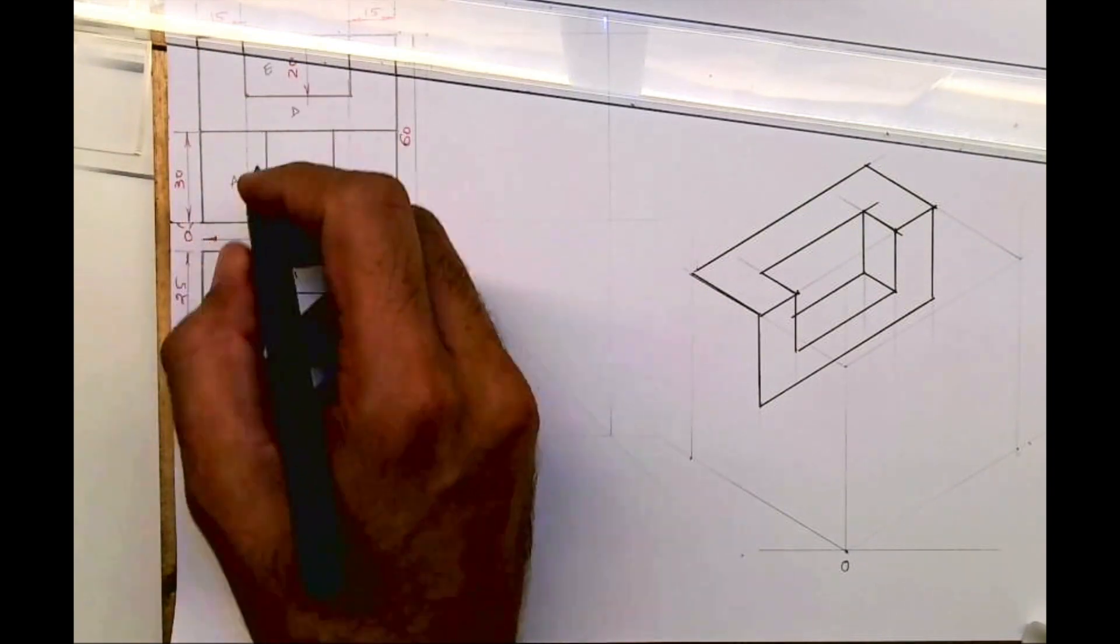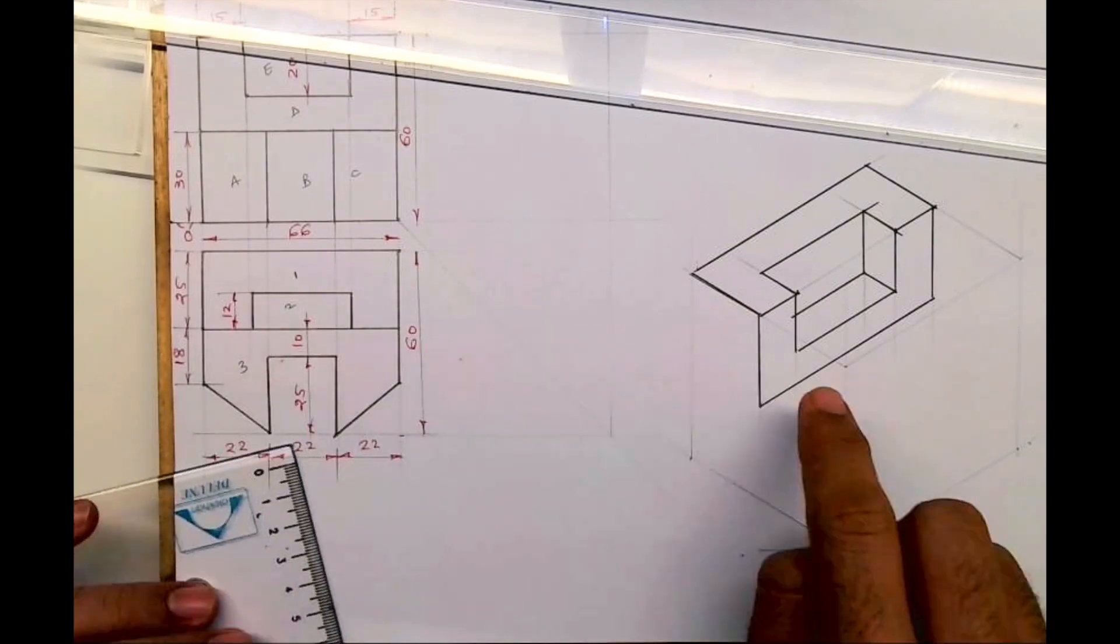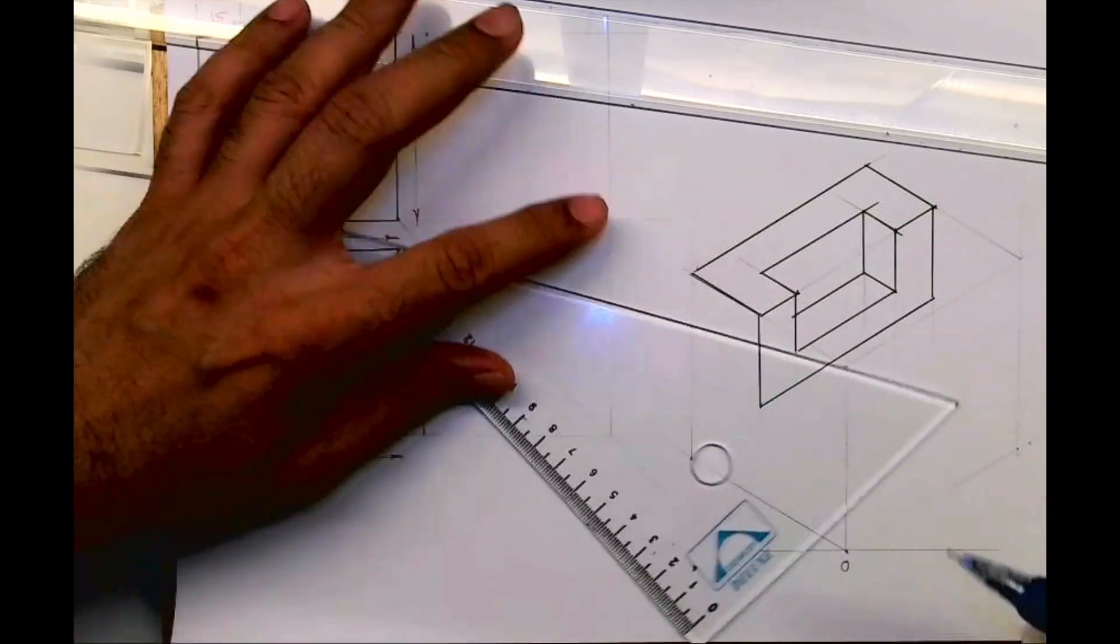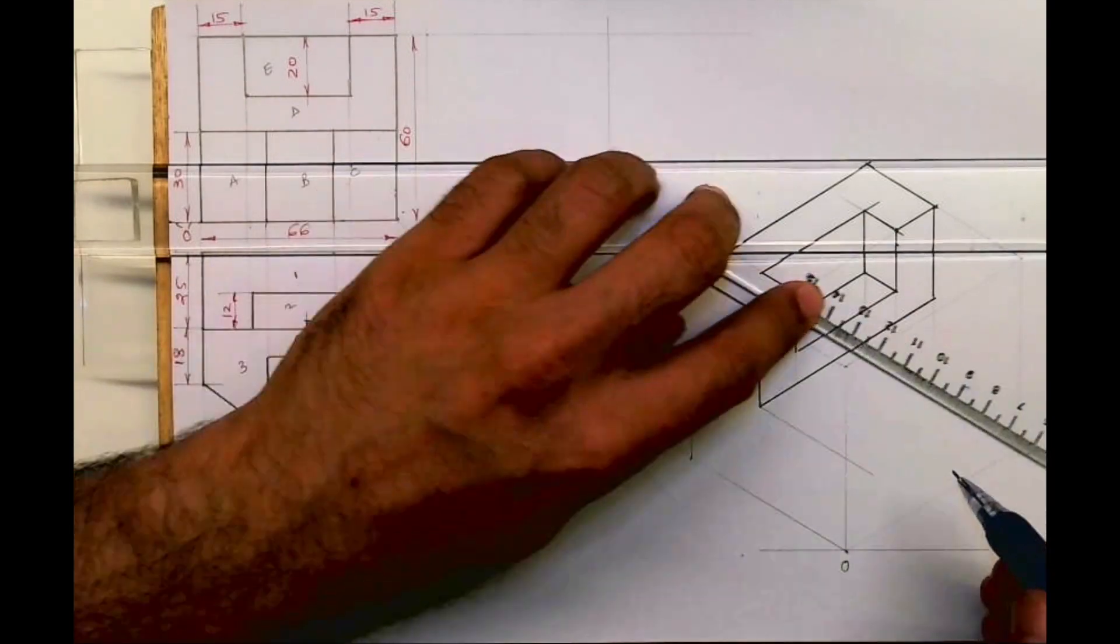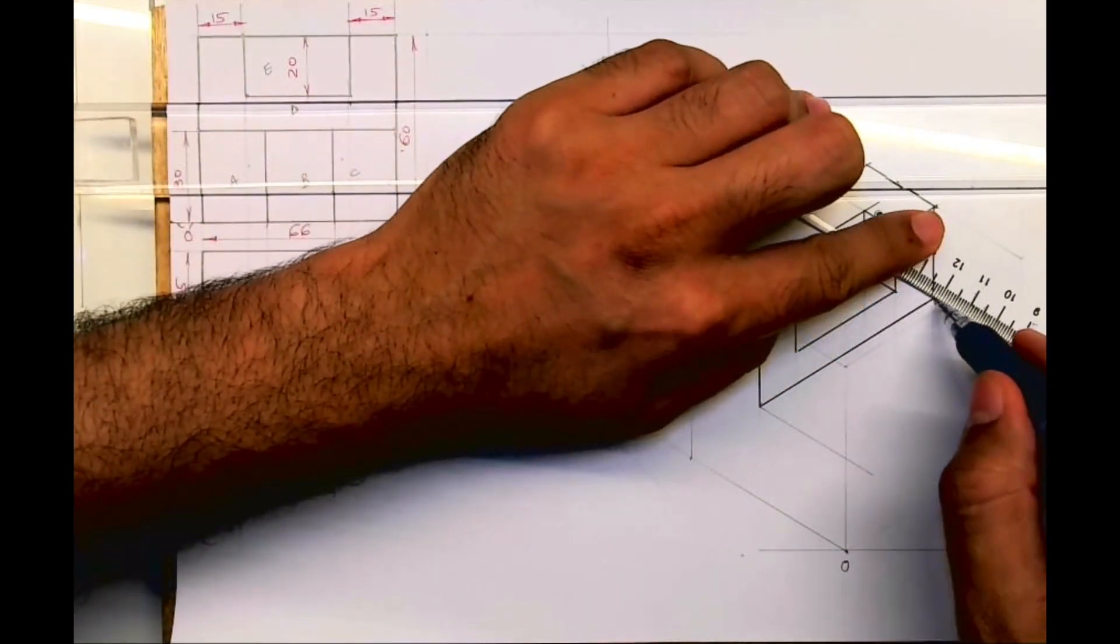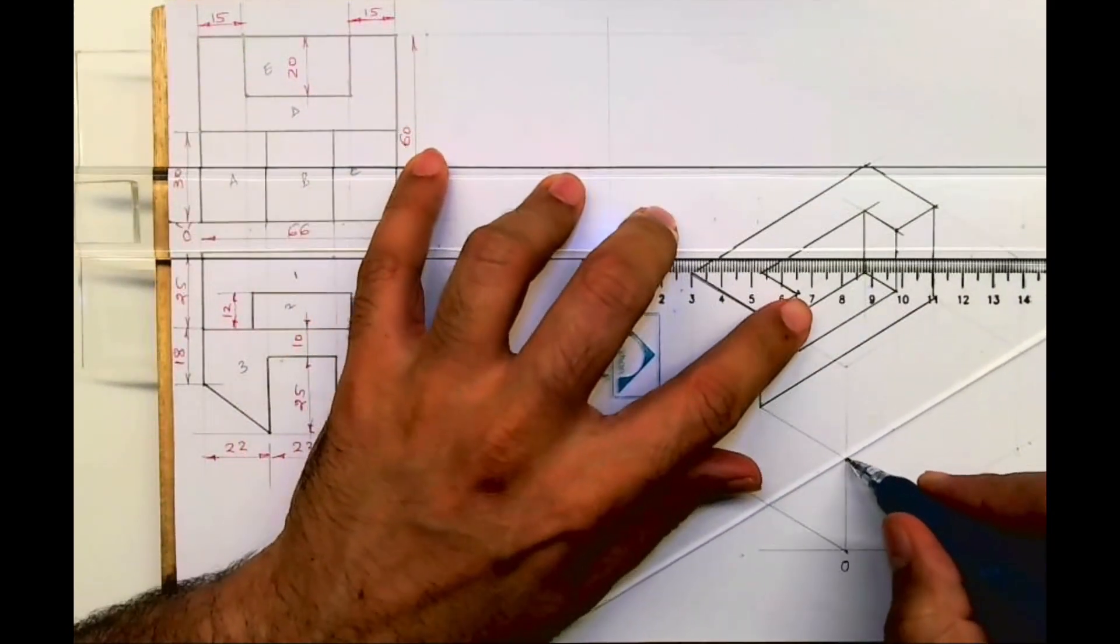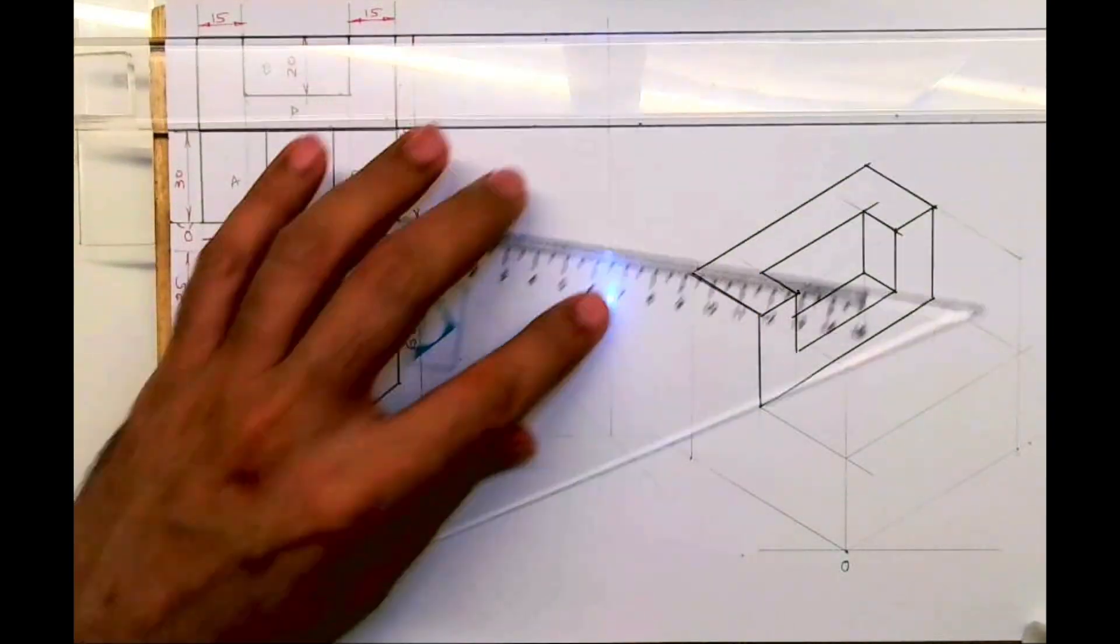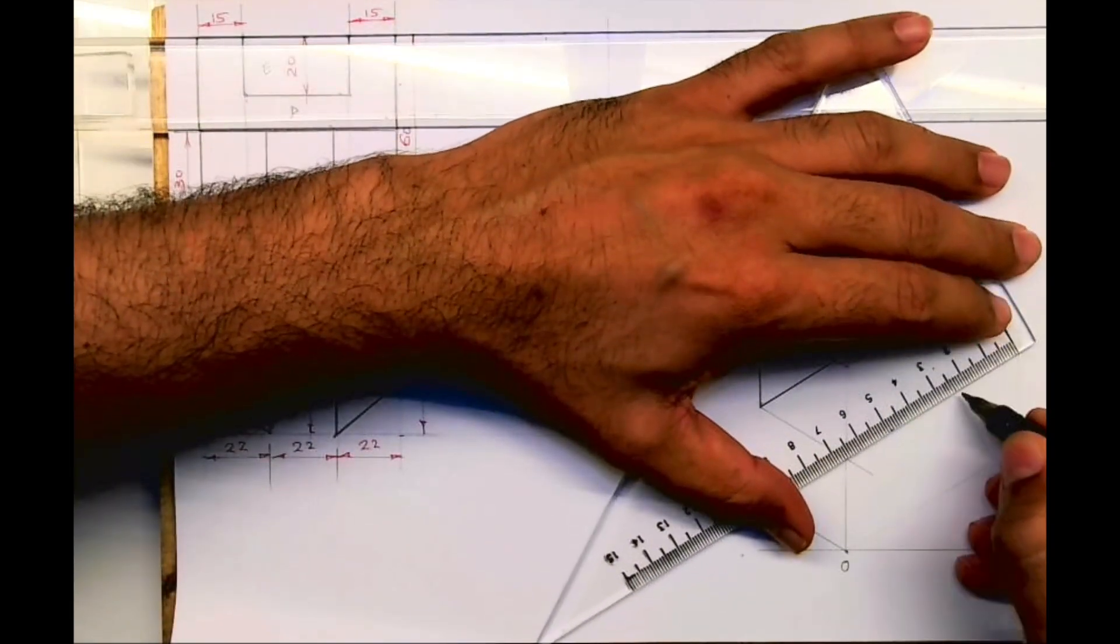Now again if you see over here, T concept - see this. So this part we will draw. Whenever you come across T concept, if you draw top view that will help you a lot, that will make your life much easier in drawing this isometric. Now see here, it is given 22, 22, 22.